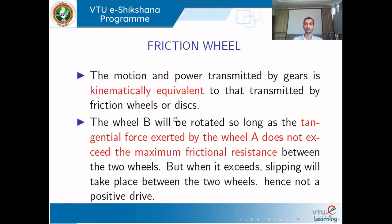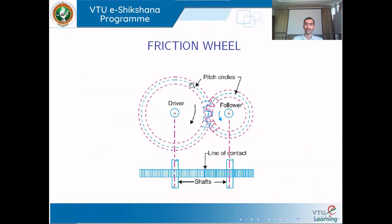Slip happens whenever the frictional force becomes greater than the tangential force. If you provide teeth on the outer periphery of the disc, it looks like a gear. There are two things to note: one is the pitch circle, which represents the equivalent of the friction disc even when using gears.